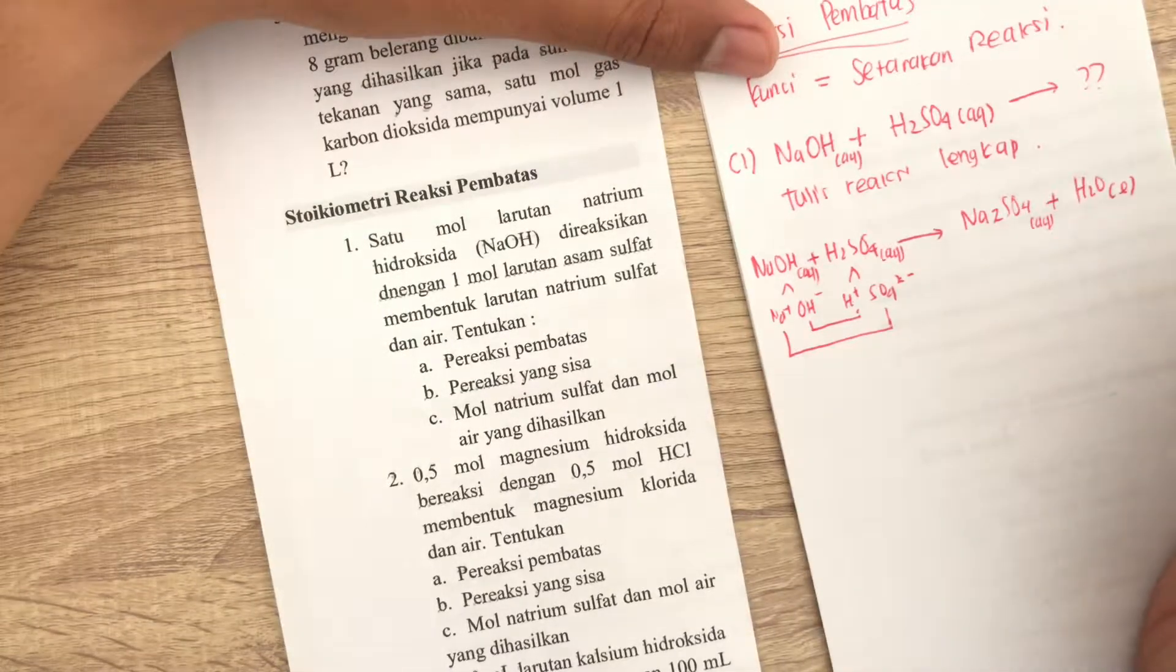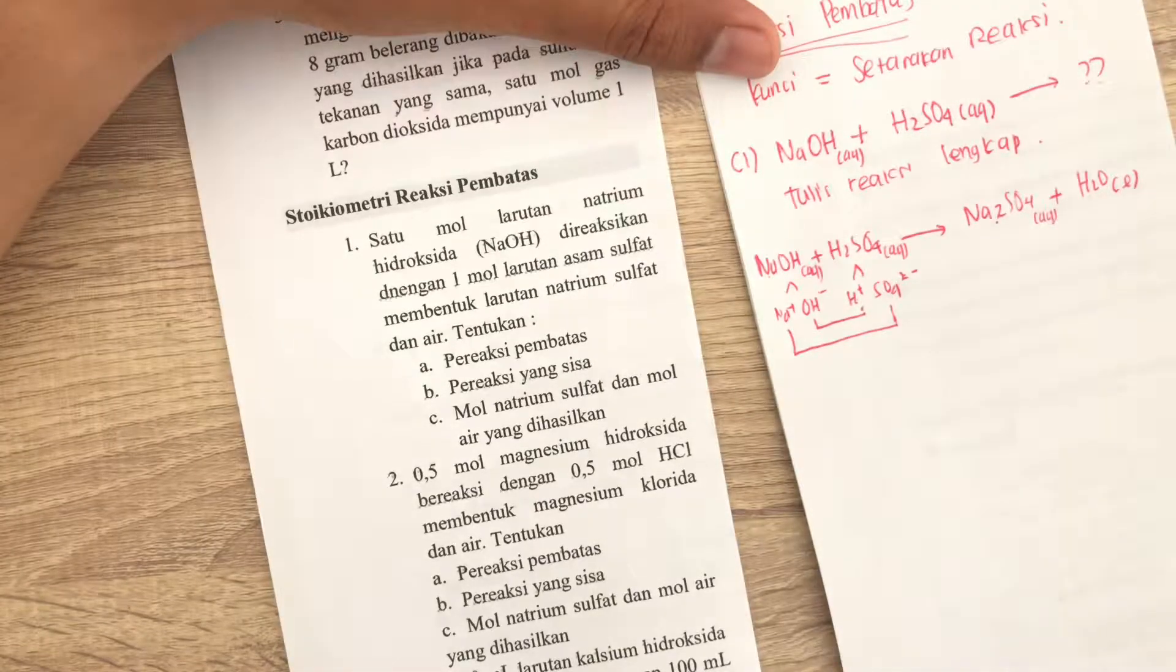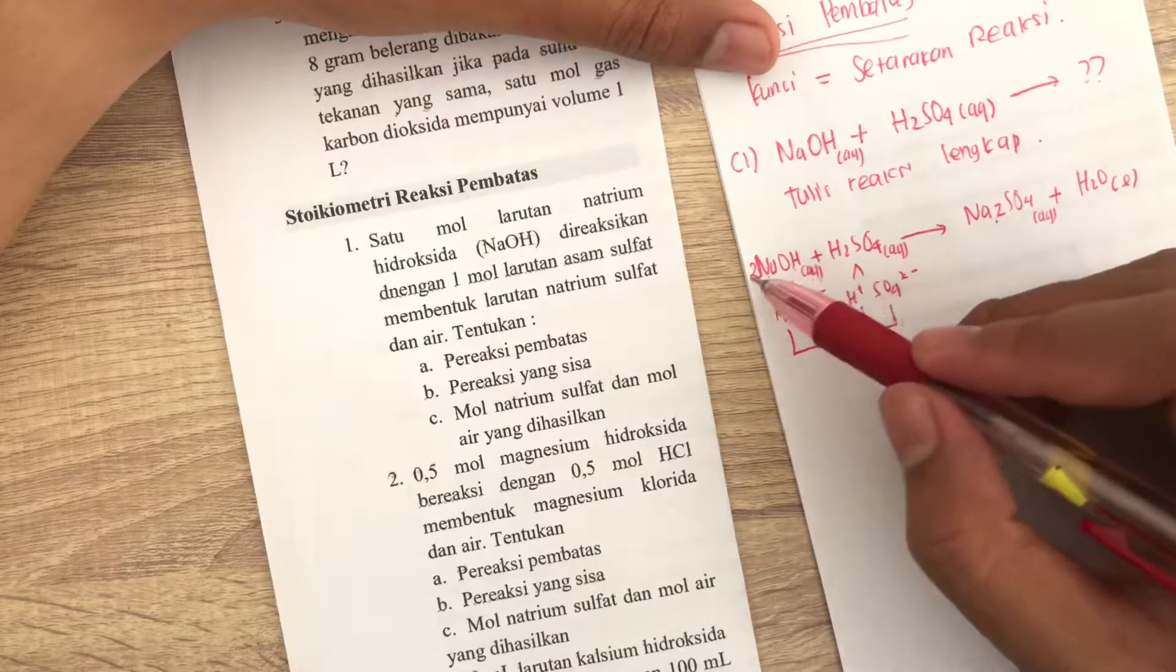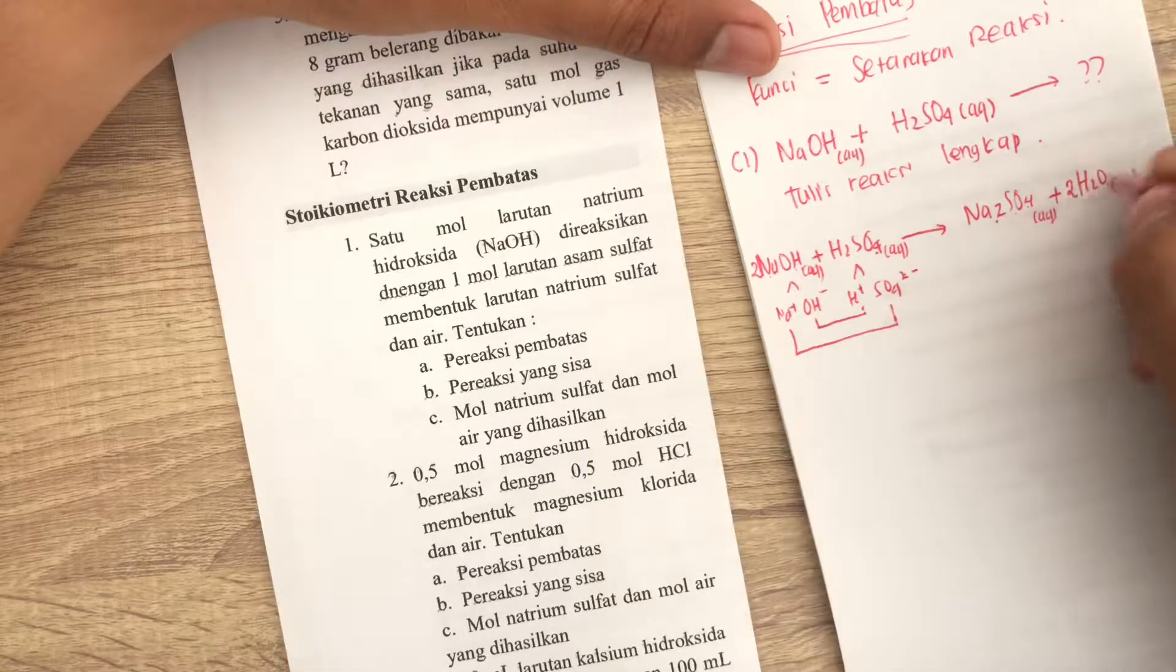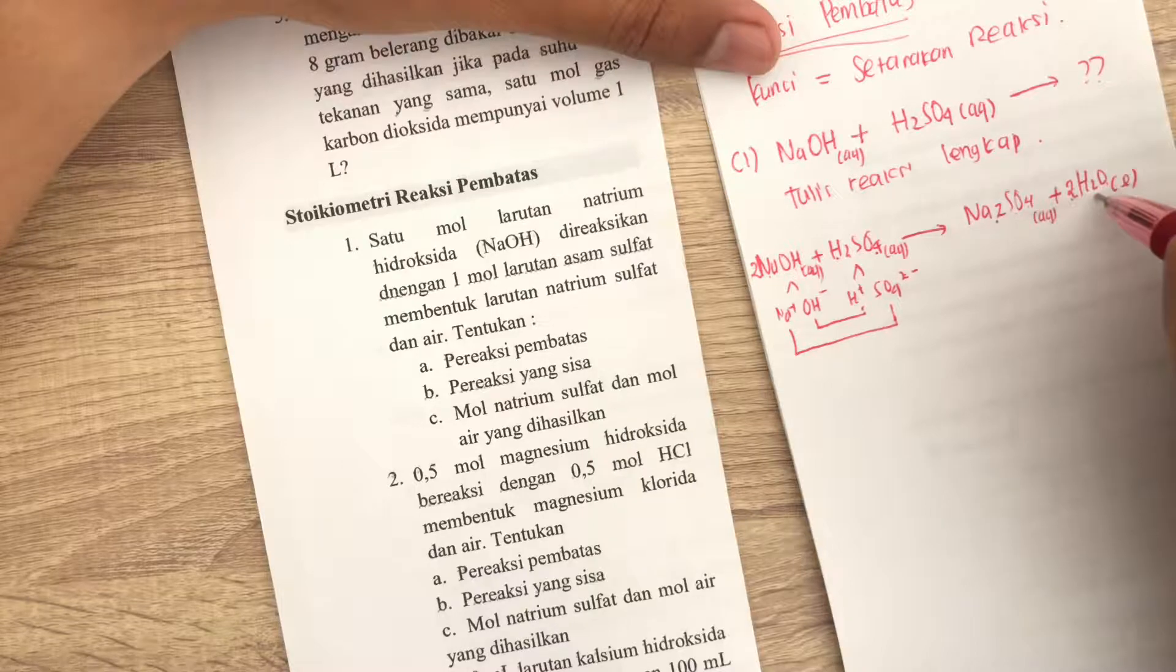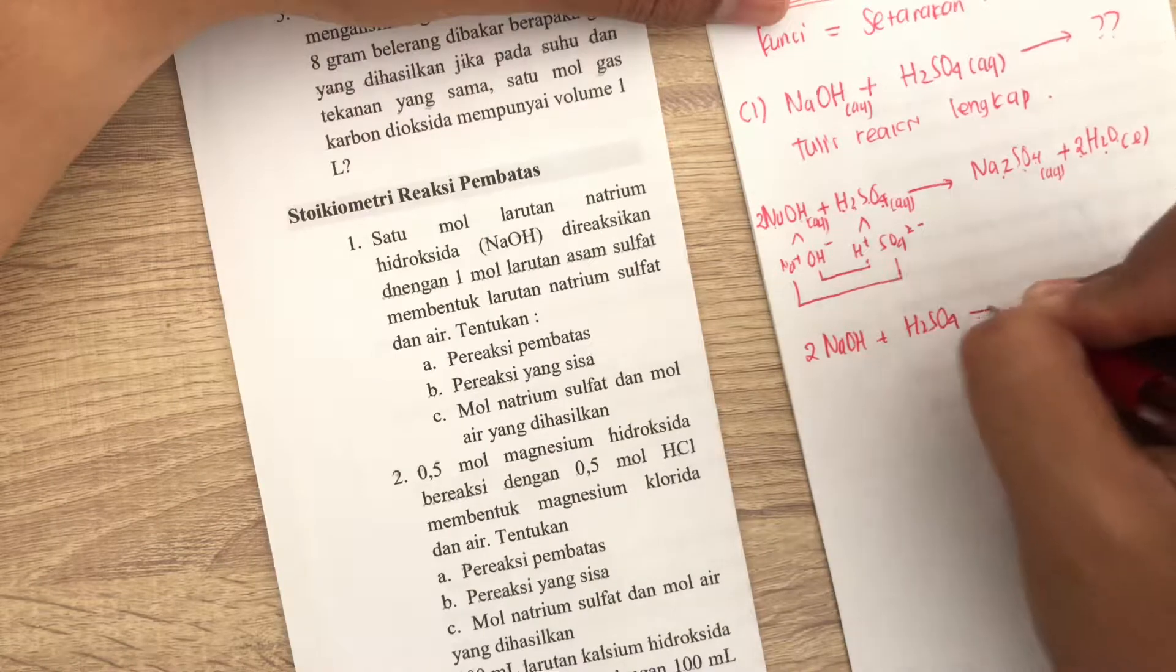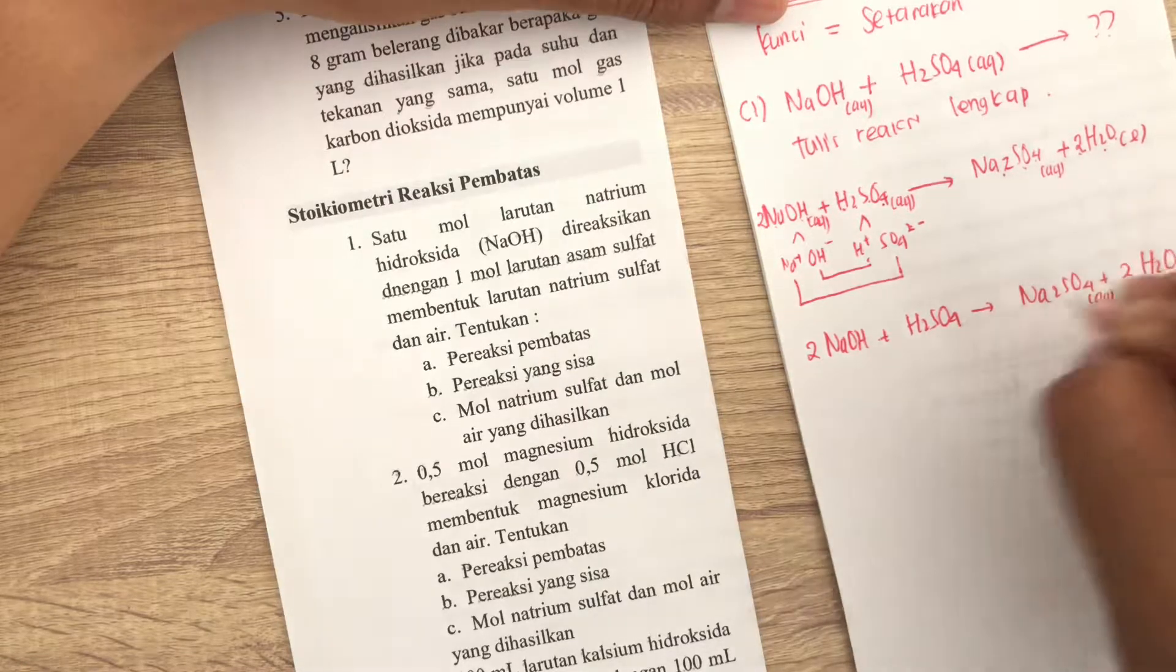Kemudian, baru deh kita setarakan reaksinya. Ini disini ada Na ada Na 1, ada Na 2, berarti ini harus dikali 2, atau ditambah dengan 2. Berarti ini jadi 2, 2 NaOH, plus O-nya udah ada 2, sama 4, 6. Berarti ini 4 sama 1 kan, berarti disini harus kali 2. Udah setara kan, O-nya udah setara, hanya disini ada 2, sama 2 berarti 4, 2 kali 2, 4 juga. S-nya ada 1, ada 1, berarti udah setara, berarti reaksinya adalah 2 NaOH ditambah H2SO4, menjadi Na2SO4 ditambah 2 H2O. Liquid, aqueous, aqueous, aqueous.